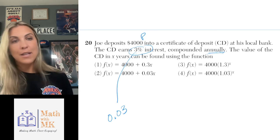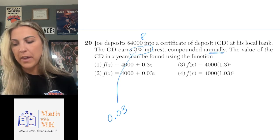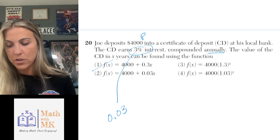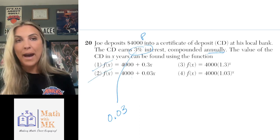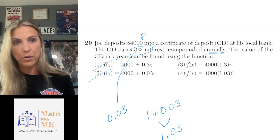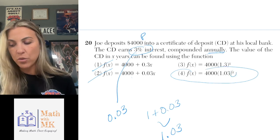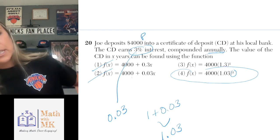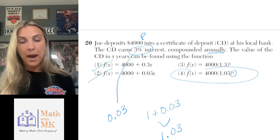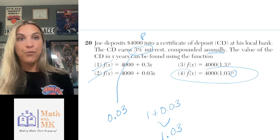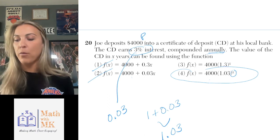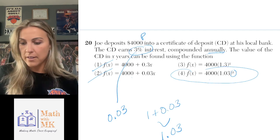When looking at interest compounded annually, you need to know the formula: F of x equals the principal amount times one plus the rate, raised to the variable representing time. Answer choices 1 and 2 are out because we multiply by one plus the rate. The rate is 0.03, so that's 1.03 — answer choice 4. The exponent should be x representing the number of years. So it's 4000 times 1.03 to the x power — that's the compound interest formula.